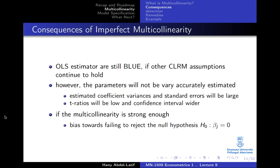Now let's look at imperfect multicollinearity. Within imperfect multicollinearity, the OLS estimator is still BLUE — if the other assumptions are still valid. But the problem is the parameters will not be very accurately estimated. This may have implications for the T-ratios and confidence intervals as well. And if the multicollinearity is strong enough, this will result in a bias toward failing to reject the null hypothesis that beta j equals zero.